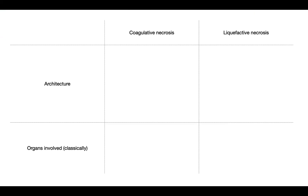As far as necrosis, the two main types are coagulative and liquefactive. Pause the slide and think about the architectural differences for each of those, and what organs are classically involved with each — then when you continue we'll fill in the table.